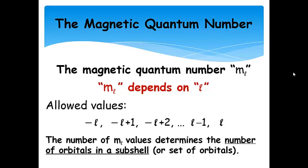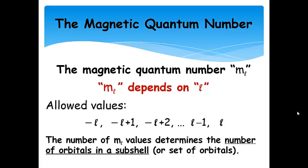The magnetic quantum number M sub L depends on what L is — just as L depended on N. M sub L can be anything from negative L, then negative L plus 1, negative L plus 2, and so on, up to positive L. The number of M sub L values gives the number of orbitals in a subshell.